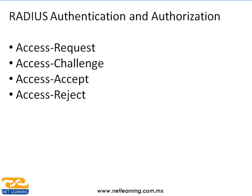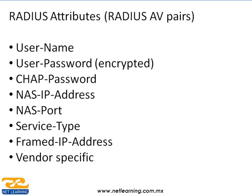Los mensajes que manda RADIUS son diferentes a los que manda TACACS. Tenemos el ACCESS REQUEST, que es cuando pide un user y un password. El ACCESS CHALLENGE se utiliza en conexiones de PPP, por ejemplo cuando se utiliza CHAP o MS-CHAP. ACCESS ACCEPT es cuando las credenciales son válidas, es decir cuando un usuario sí se pudo autenticar correctamente. Y el ACCESS REJECT es cuando un usuario no se pudo autenticar correctamente.